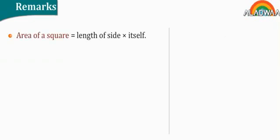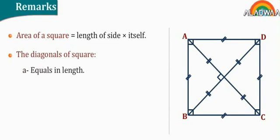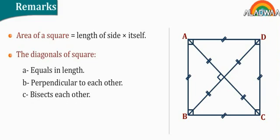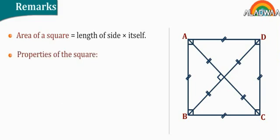Remarks. Area of a square equals length of side times itself. The diagonals of a square are: A) equal in length, B) perpendicular to each other, C) bisect each other. Properties of the square.